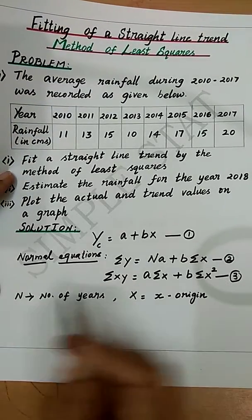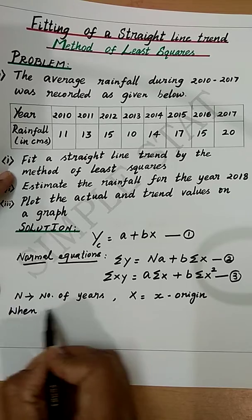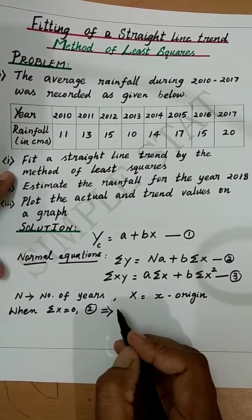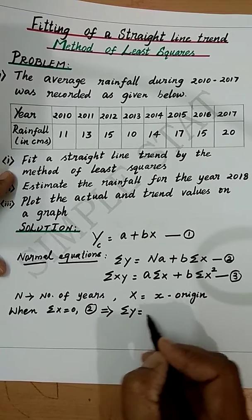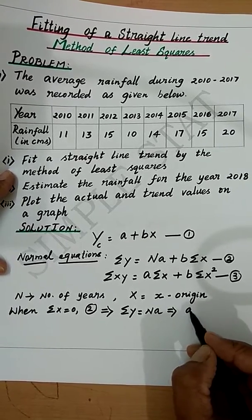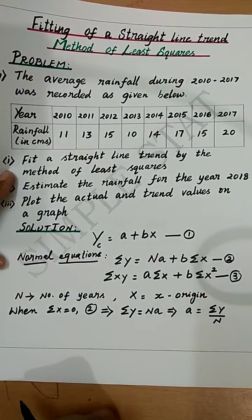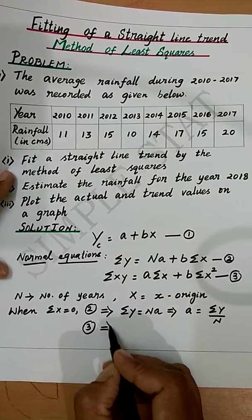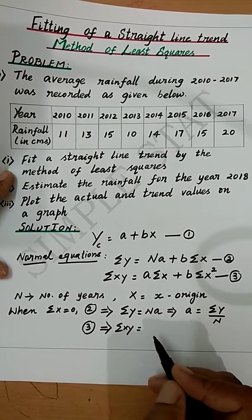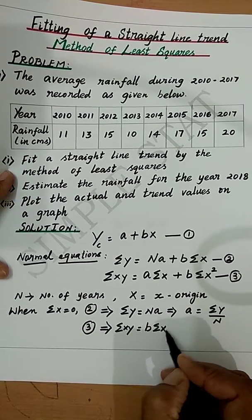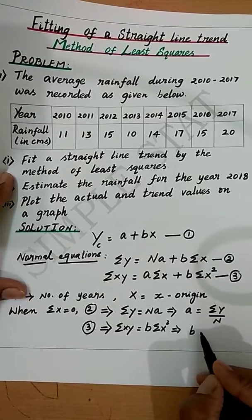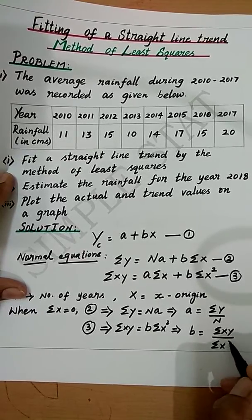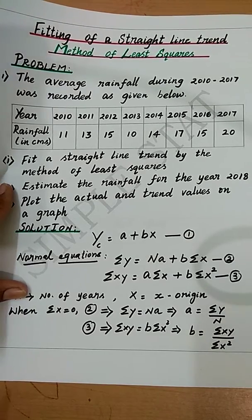By suitably choosing the origin, we can make summation X equal to 0. When summation X = 0, equation 2 gives summation Y = na, so a = summation Y / n. Similarly from equation 3, summation XY = b(summation X²), giving b = summation XY / summation X².